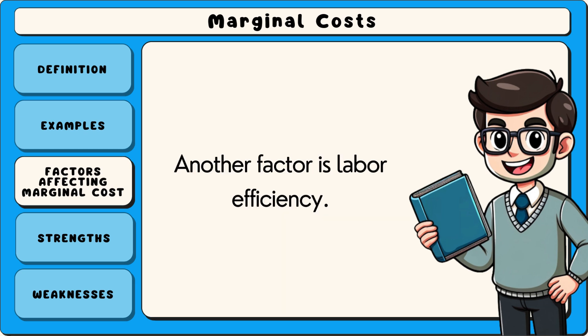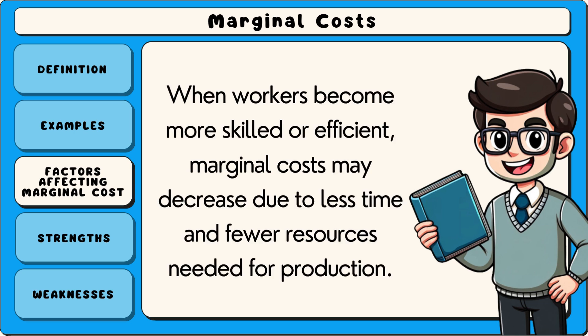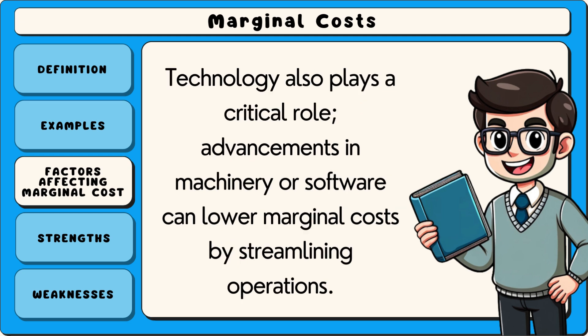Another factor is labour efficiency. When workers become more skilled or efficient, marginal costs may decrease due to less time and fewer resources needed for production. Technology also plays a critical role — advancements in machinery or software can lower marginal costs by streamlining operations.